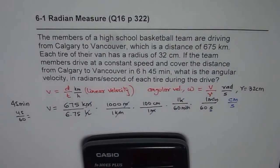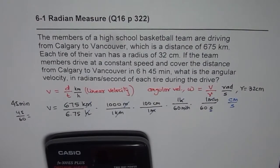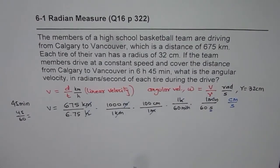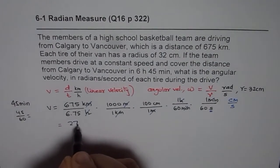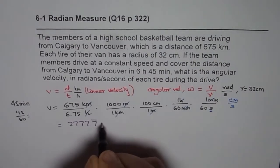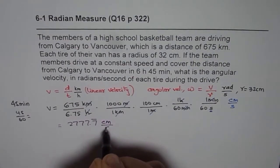Let us use the calculator and find this answer. We have 675 divided by 6.75 times 1000 times 100. Now we have to divide by 60 and 60 which is 3600. We get 2777 recurring 7. So what we get here is 2777.7 recurring, and this is in centimeters per second.